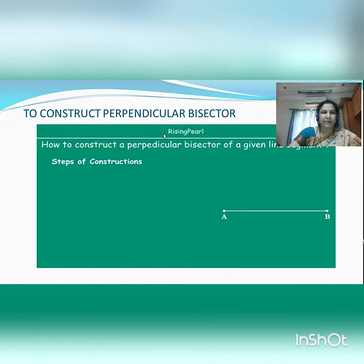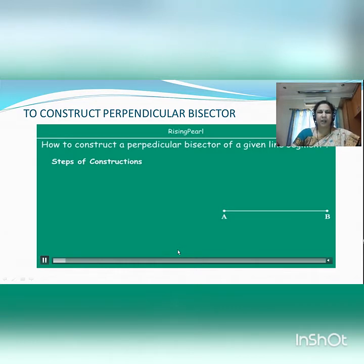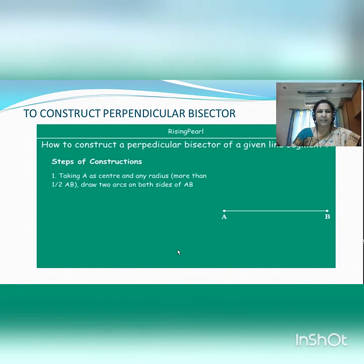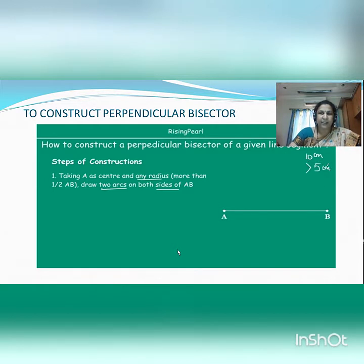This is how we are going to construct a perpendicular bisector of a given line segment. This is a given line segment AB. We are going to construct a perpendicular bisector of this segment. The first step: taking A as center and any radius — that should be more than half of AB. This is important: it should be more than half of AB. We will draw arcs on both sides of AB. If the segment is of 10 cm, then we have to take a distance of more than 5 cm in our compass.